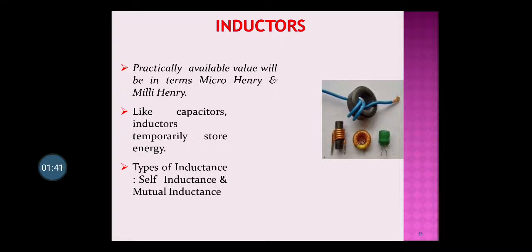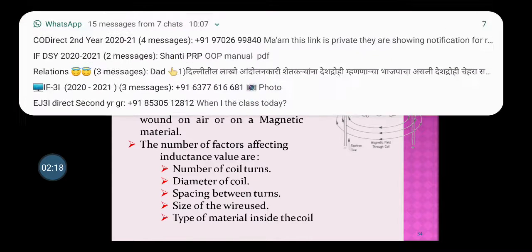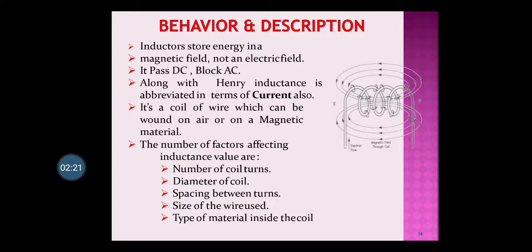There are different types of inductance: self inductance and mutual inductance. The magnetic field is formed when current passes through the inductor. The inductor stores energy in a magnetic field, not an electric field. It passes DC and blocks AC — exactly opposite to that of a capacitor, which passes AC and blocks DC.